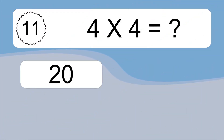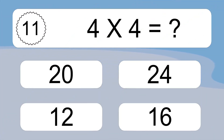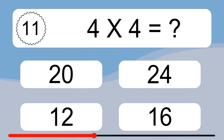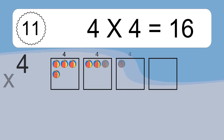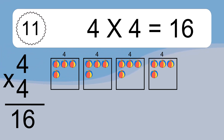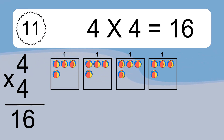Four times four equals what? Four times four equals 16. We have four boxes and each box has four colorful balls inside. If you count all the balls in all the boxes together, you will have four times four balls. This equals 16 balls.